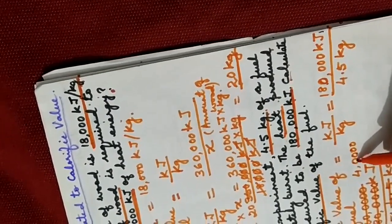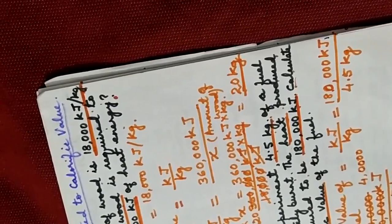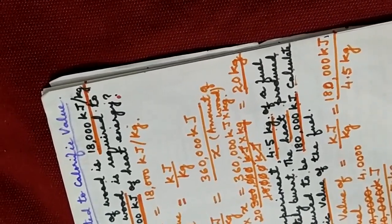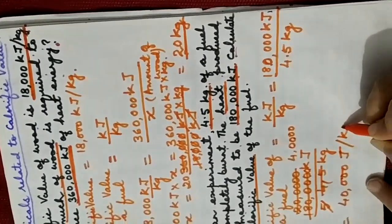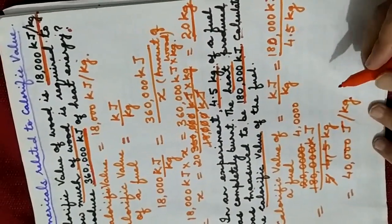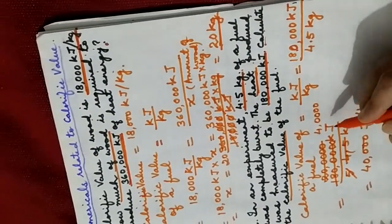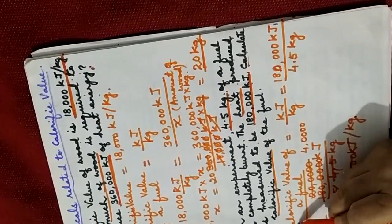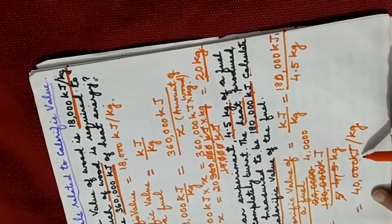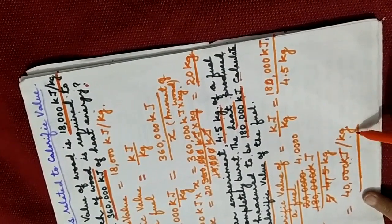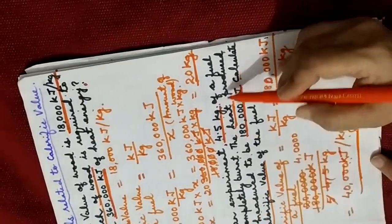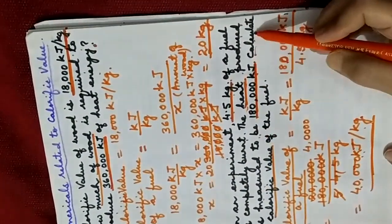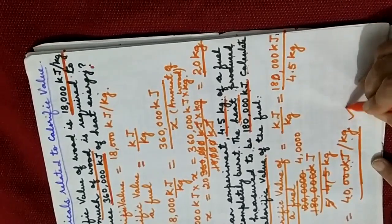The calorific value of the fuel comes out to be 40,000 kilojoules per kilogram. That means the heat produced was 180,000 kilojoules and the calorific value of the fuel is 40,000 kJ per kg.